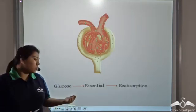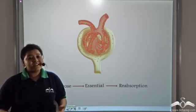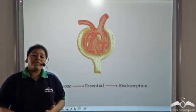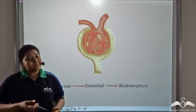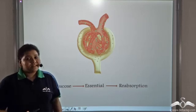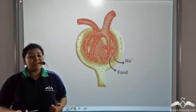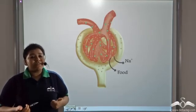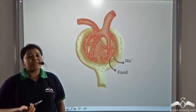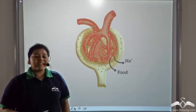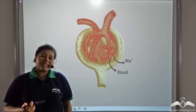Glomerular filtrate contains glucose and we know that glucose is a very essential nutrient that we require for a healthy body. So glucose from the glomerular filtrate needs to be reabsorbed back into the body. Not only glucose, there are other food molecules which have high nutritional value and minerals such as sodium that are present in the glomerular filtrate and these nutrients need to be reabsorbed from the glomerular filtrate back into the body.